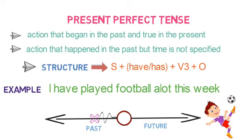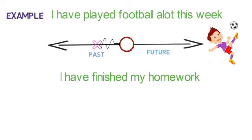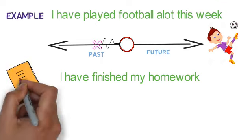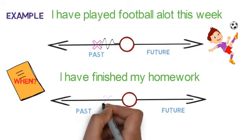Now, let's look into an example of finished action without any time declared: I have finished my homework. Here, we are getting to know that the homework is done, but the time is not specified when exactly the homework was done. So, in the timeline, it will look like this.